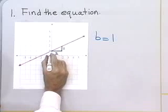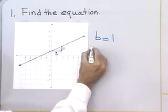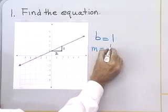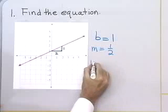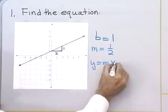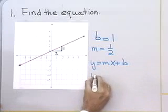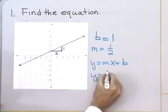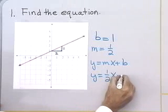So, the rise of 1 accompanied by a run of 2, so m will be equal to 1 half. I know the equation of any straight line can be written as y equals mx plus b, so this line must be y equals 1 half x plus 1.